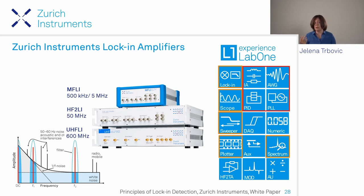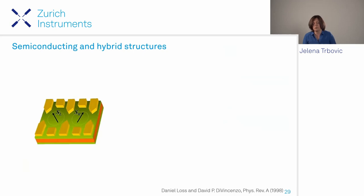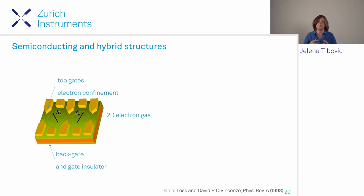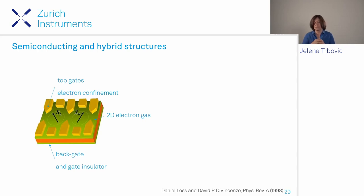Additional options include impedance measurement, sourcing arbitrary waveforms, and PID and PLL controllers. For characterization, we first look at the full device. For example, in a double quantum dot system used for spin qubits, we need to characterize the 2D electron gas, ensure the back gate and gate insulators don't contribute noise, and verify that top gates define well-behaved quantum dots with non-fluctuating energy levels.